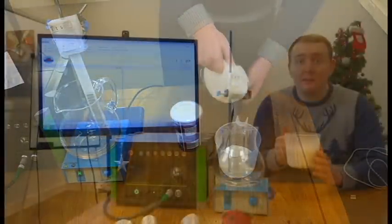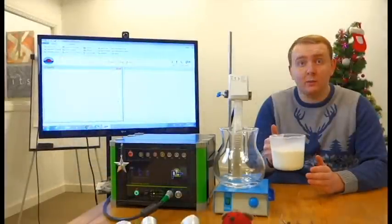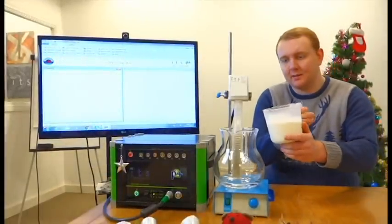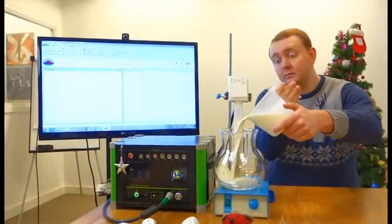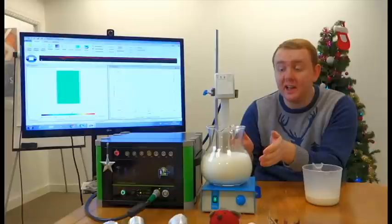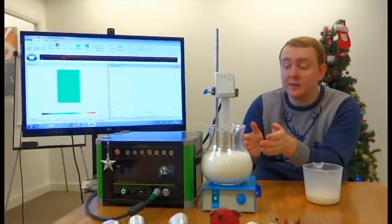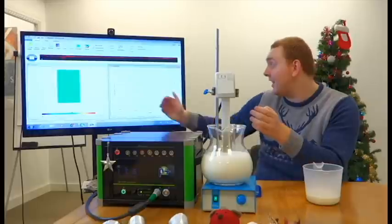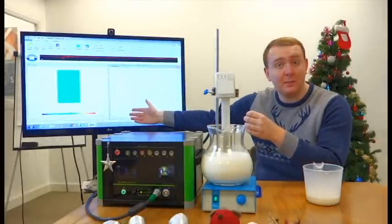Now that we've finished preparing our milk and cream, we can add it to the jug where the sensor is in place. You can see that the sensor has detected a reading and presents us with a homogenous tomogram on the screen.